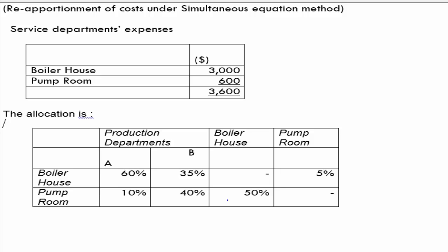How do we find the exact cost of the service departments? The boiler house spent $3,000, but 5% of that has gone to the pump room. The pump room spent $600, of which 50% has gone to the boiler house. So the boiler house cost is not merely $3,000 — it has also availed 50% of services from the pump room. Similarly, the pump room cost is not merely $600 because it received 5% of services from the boiler house. All of this can be solved using a simultaneous equation.